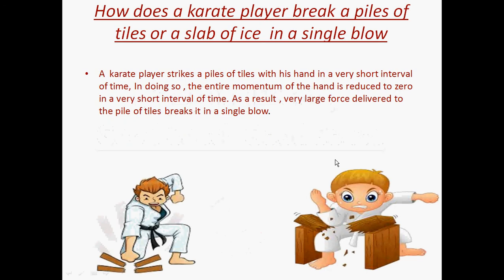There are various sporting events, like karate, in which a karate player breaks a pile of tiles or a slab of ice in a single blow. How does this actually happen? In this figure, this man is using his punch to break a wooden slab, whereas this young child is using his elbow to break the wooden slab. So how is this happening so easily?